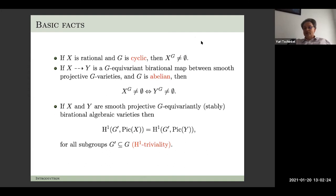Let me recall some basic facts about actions. If X is rational and the group is cyclic, then we're guaranteed to have a fixed point. If you have a G-equivariant birational map between smooth projective G-varieties and the group is abelian, then the existence of a fixed point is an invariant — if one has a fixed point then so has the other.